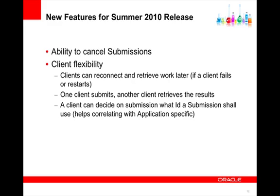It also supports the ability for one client to submit and possibly another client to retrieve the result. So this means that you can have a number of processes that act as producers of work, and a set of clients that act as consumers of the results. The client can also decide what identifier to use for a submission, so that another client can know what identifier to use to retrieve the results. This helps with correlating application-specific identifiers.